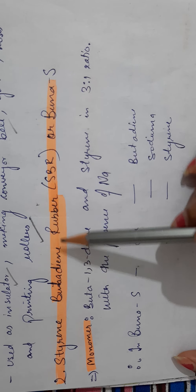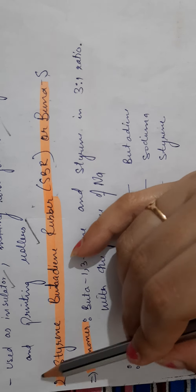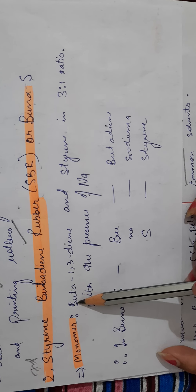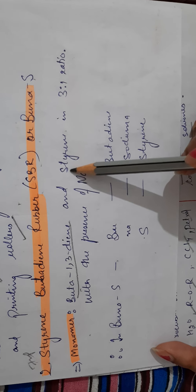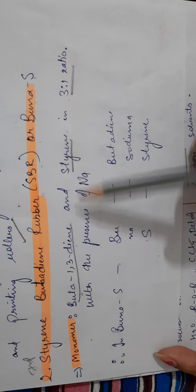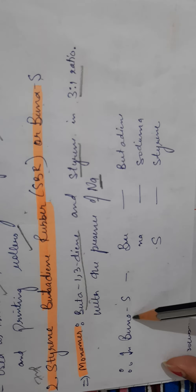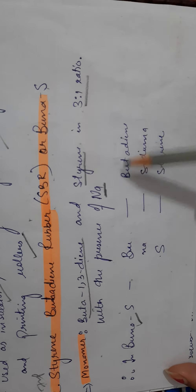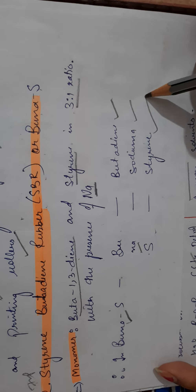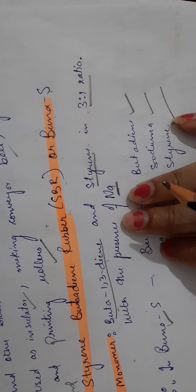The next example of synthetic rubber is styrene-butadiene rubber, also called SBR or BUNA-S. It is made from two monomers: butadiene and styrene, in a 3:1 ratio, with sodium as catalyst. In BUNA-S: BU stands for butadiene, NA stands for sodium, and S stands for styrene.